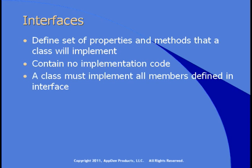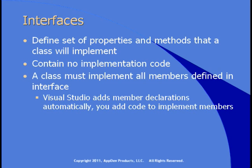If you implement an interface in a class, then you have to implement all of the members that are defined in the interface. When you do that, Visual Studio adds the declarations for you and then you just write the code to make the properties and methods do what they need to do.